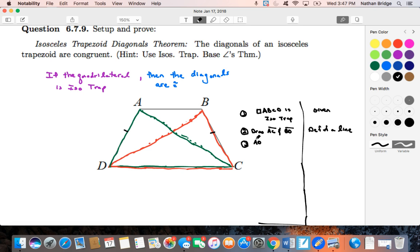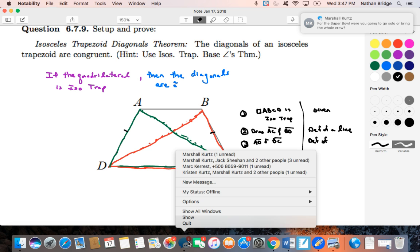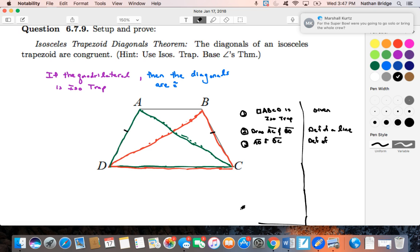A, D is congruent to B, C. And the reason why we know that is just from the definition of an isosceles trapezoid. That's a one-two punch, right? Excuse me a second while my buddies stop harassing me. I will close that up. Definition of an isosceles triangle. Okay, great.